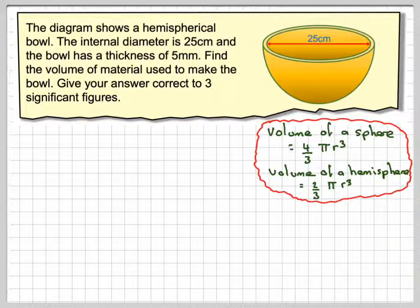So in order to solve this question, all we need to know is what the radius of the internal bit is and the radius of the external bit, and then if we subtract the two we will get the volume of the whole shape.